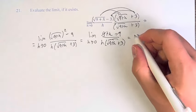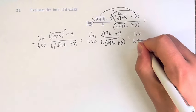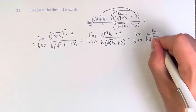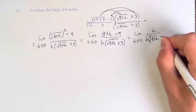9 minus 9 is 0, so this is the limit as h approaches 0 of h over h times the square root of 9 plus h plus 3.